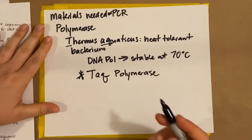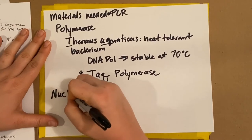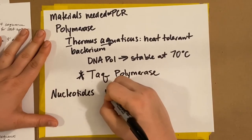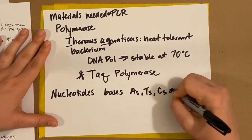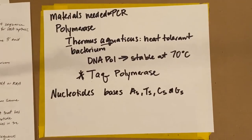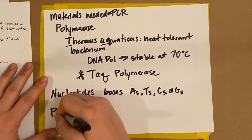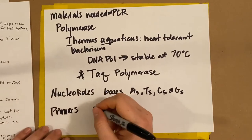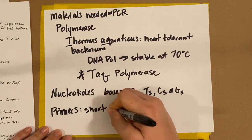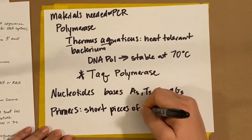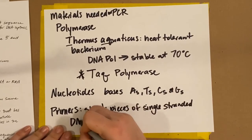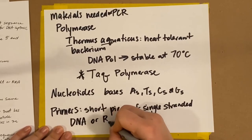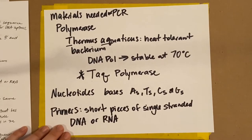The other materials needed for PCR are nucleotides — so you need the bases: A's, T's, C's, and G's — because if you're making new DNA you need nucleotides to attach to your growing strand. And the last thing you need are those primers: short pieces of single-stranded DNA or RNA.